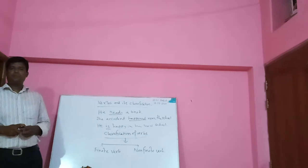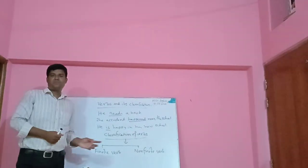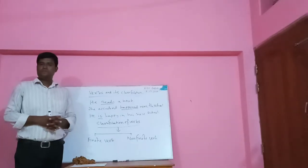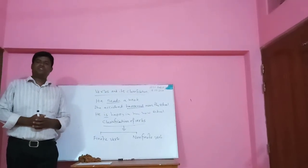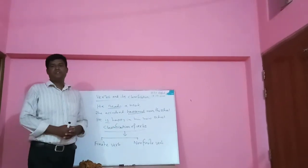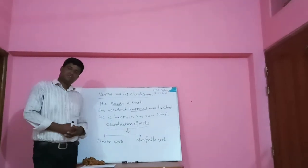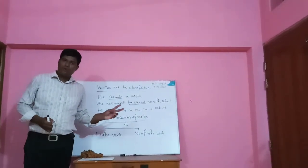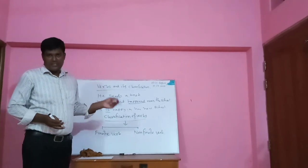Do you know what a finite verb and a non-finite verb are? I will tell you. A finite verb is a verb that expresses the complete meaning of a sentence. But on the other hand, a non-finite verb cannot express the complete meaning of a sentence. Secondly, a finite verb is inflected on the basis of the number and person of the subject, but a non-finite verb is not inflected according to number and person of the subject.